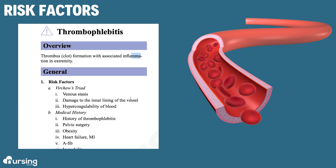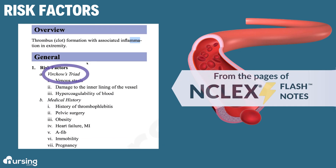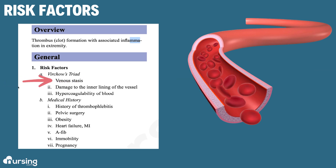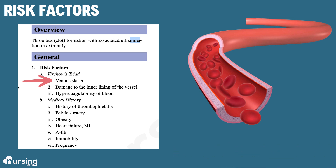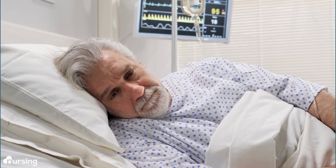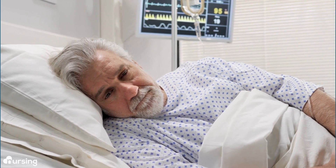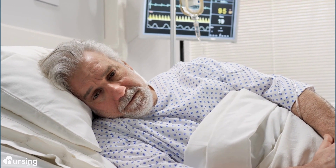So what causes thrombophlebitis? There's something called Virchow's triad, which tells us the three main things that create ideal conditions for clot formation. The first one is venous stasis — this is when blood is pooling and not returning to the heart like it should. This happens a lot when patients are bed-bound or not ambulatory, because immobility leads to pooling of blood within their legs.